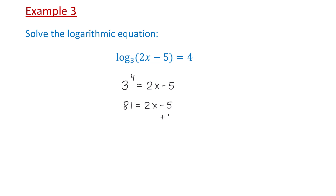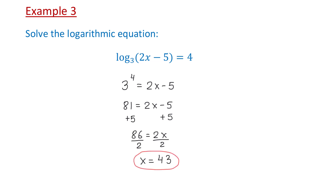Let's add 5 to both sides. Then 86 equals 2x. To solve for x, we will divide both sides by 2. Then x equals 43. The solution is 43.